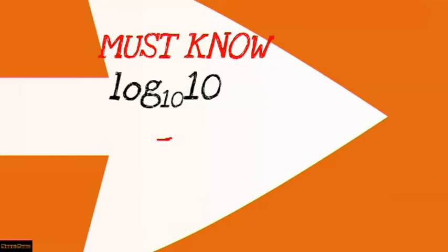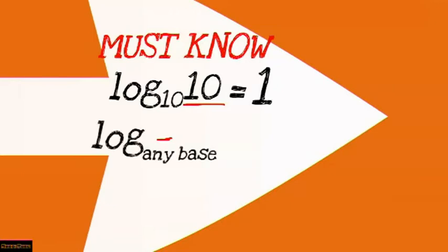There are two things to highlight. First, log base 10 of 10 equals 1 — and in place of 10, it could be any other number, so log base 3 of 3 is also equal to 1. Second, log of any base of 1 is equal to 0. So for instance, log base 5 of 1 equals 0.